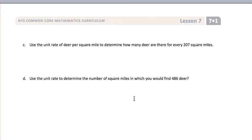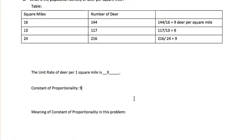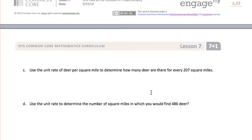Now we're asked to find the deer per square mile to determine how many deer there are for every 207 square miles. If we know from above that there are 9 deer per square mile, we can find the number of deer in any particular area. So we take 207 and multiply it by 9 deer per square mile, giving us 1,863 deer in a 207 square mile space.